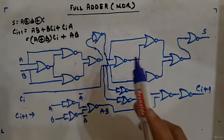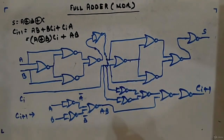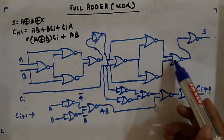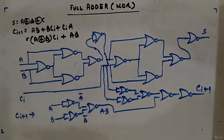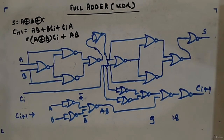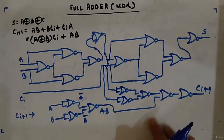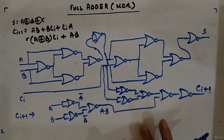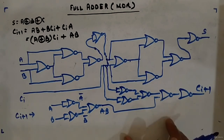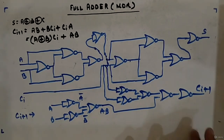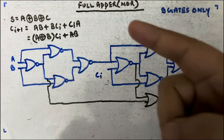The NOR gate implementation is clearly more complex than NAND. The sum alone requires ten gates and the carry requires eight, totaling 18 gates, whereas the NAND gate implementation uses only nine gates total. The better approach is to use NAND gates, but this is included for completeness so you understand how to implement a full adder using only NOR gates.